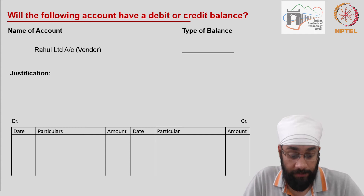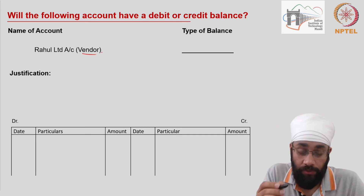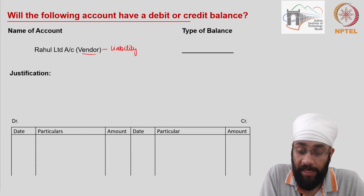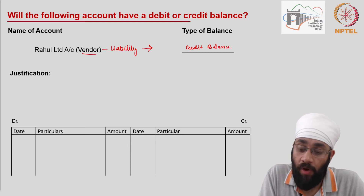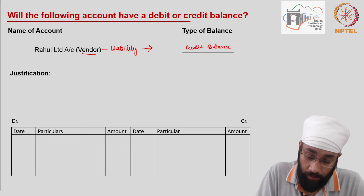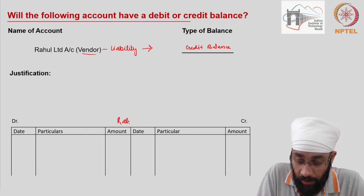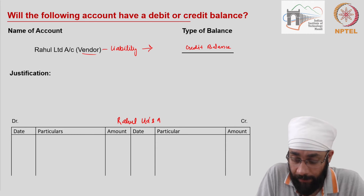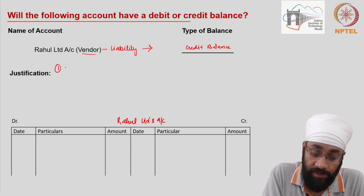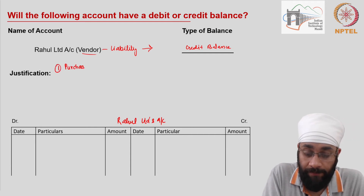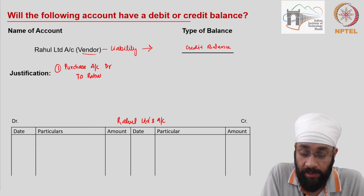Let us look at another account — a vendor's account. All vendors are liabilities, and this is a liability account. All liability accounts have a credit balance — this is the exact opposite of the debtor's account. Let's say this is Rahul Limited's account. When you purchase from your vendor, the journal entry is: purchase account debit to the vendor's account.